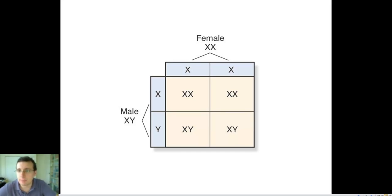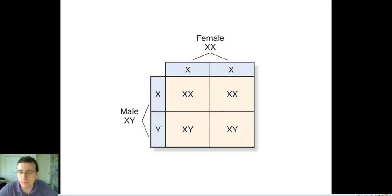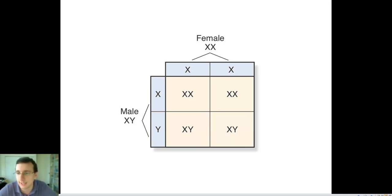In this video we're going to be talking about sex linkage, or genes discovered by Thomas Hunt Morgan which were in the sex chromosomes and therefore the traits are related to the genders or to the sexes.